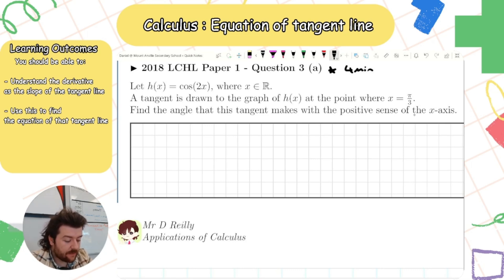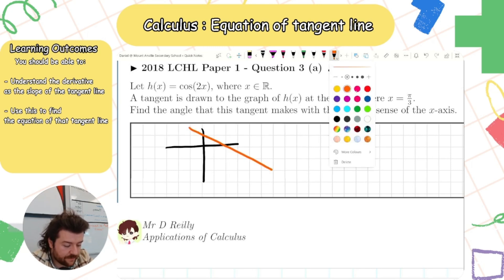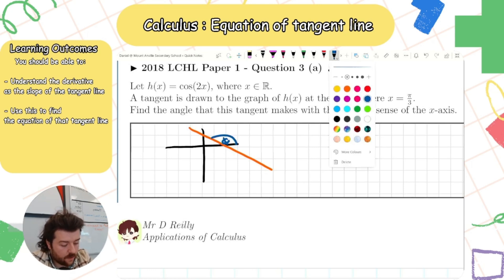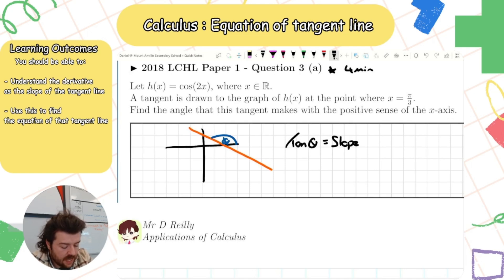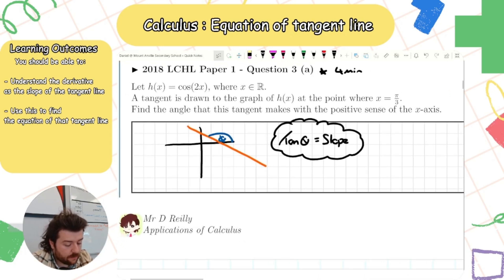If you recall from coordinate geometry, if that is my tangent line, I'm looking for the angle it makes with the x-axis. What we know is that tan(θ) = slope. So tan of that angle equals the slope of the tangent, which is going to become useful. I need to find the slope of this tangent line.